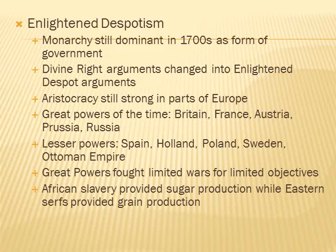Enlightened despotism. The monarchy was still the dominant form of government in Europe in the 1700s. Divine right arguments during this time, however, were changed into arguments for enlightened despots — the idea of despots as servants of the state who are in charge but taking care of their people, as opposed to being placed there by God. The aristocracy was still strong in parts of Europe.